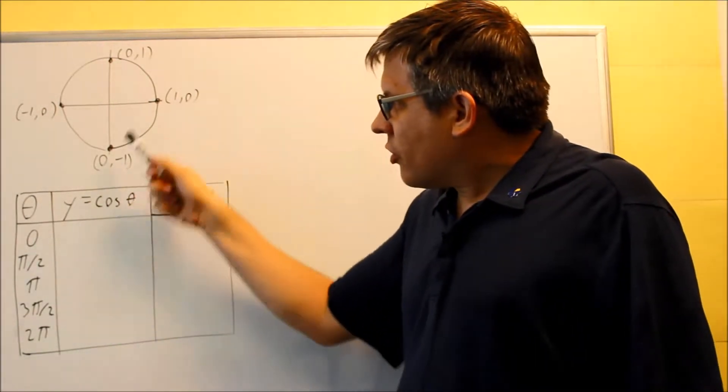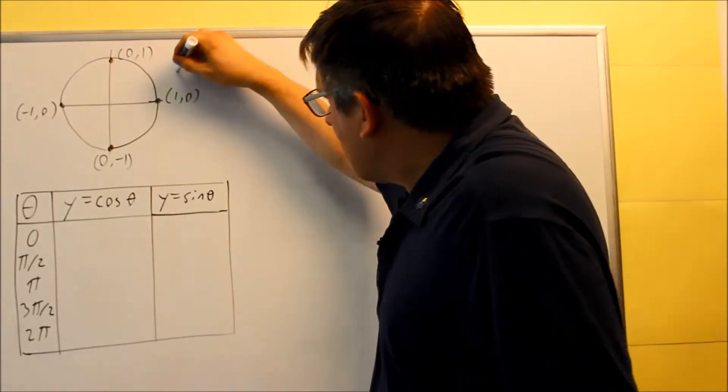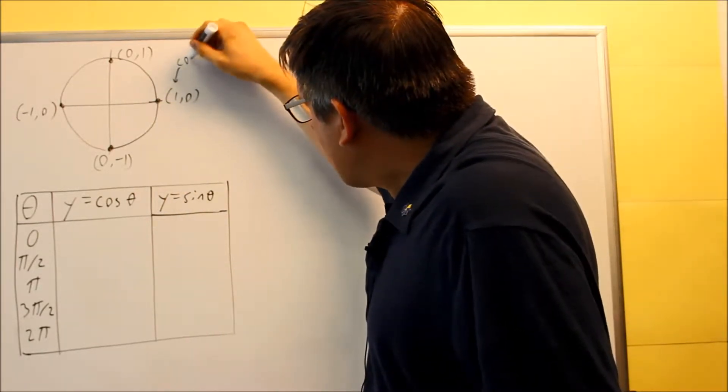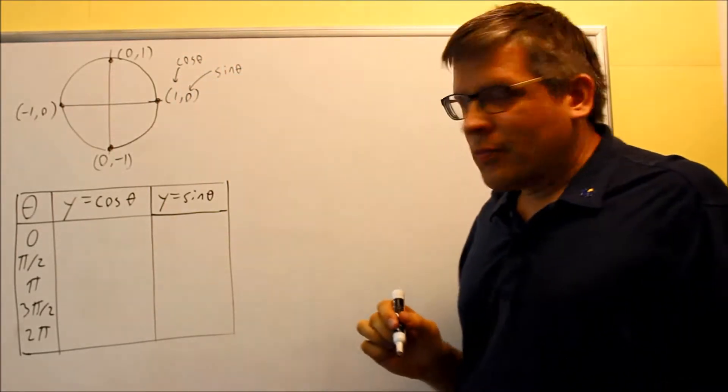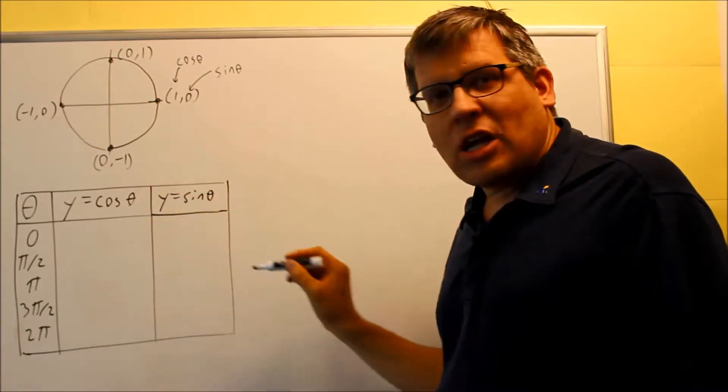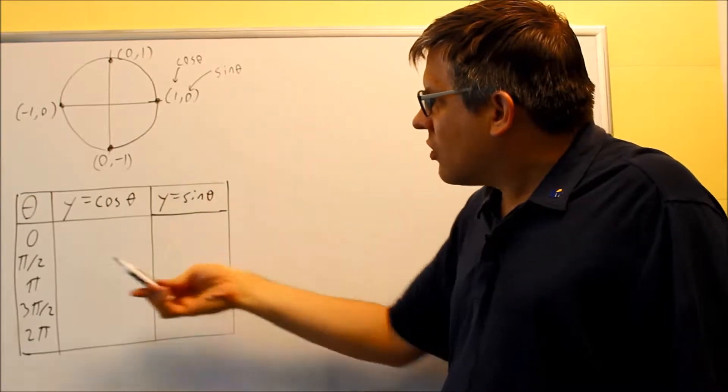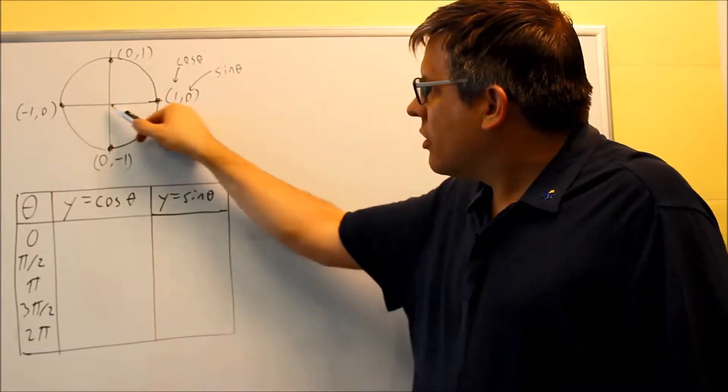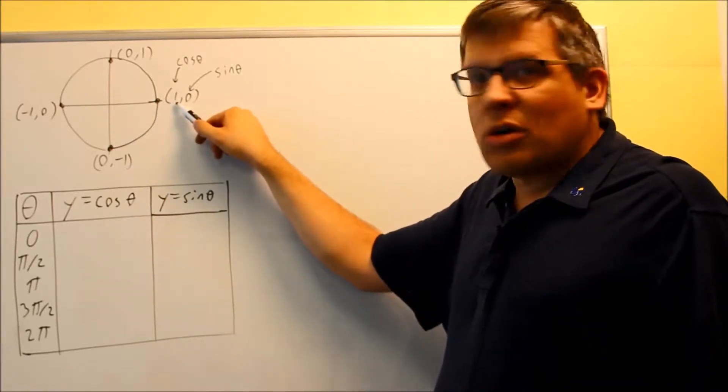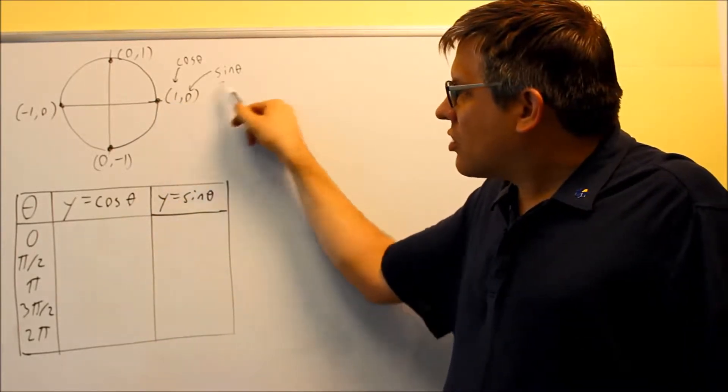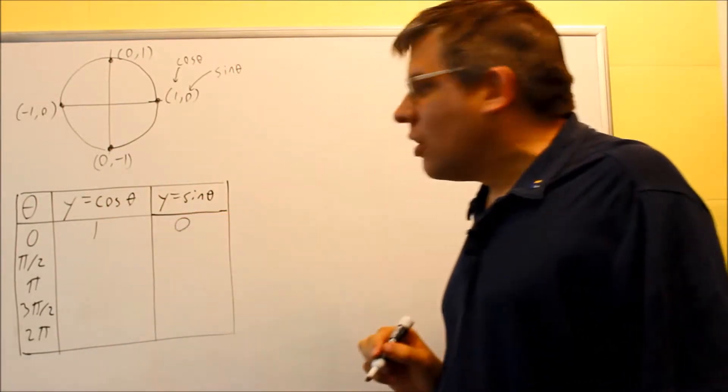So when I'm at zero degrees, zero degrees is right here. Remember that your x value is your cosine and your y value is a sine. So when I put my values on this table here, I'm going to get them directly from the unit circle. For instance, when I'm at zero degrees, the cosine is always going to be the first number that you see in the unit circle and sine is always the second number. So I would put a one here and a zero here for sine.